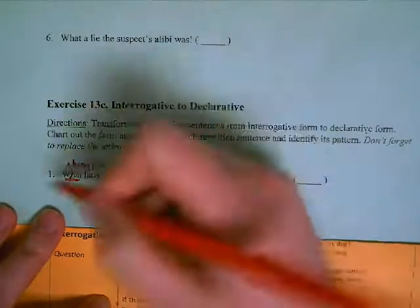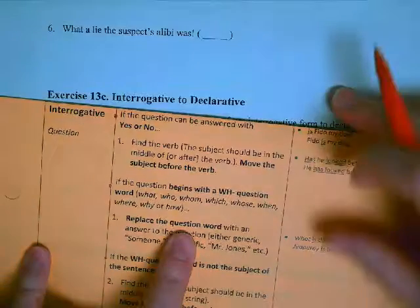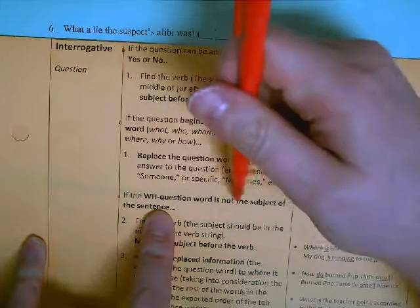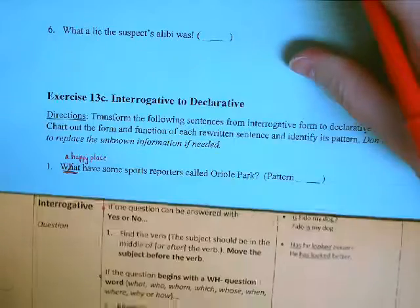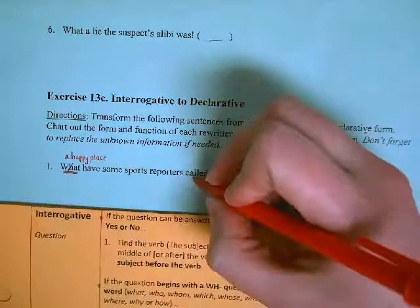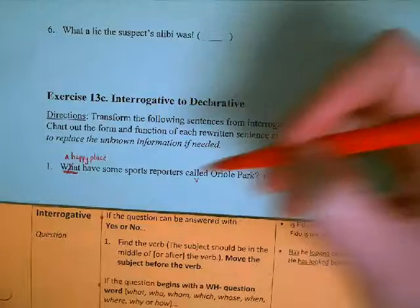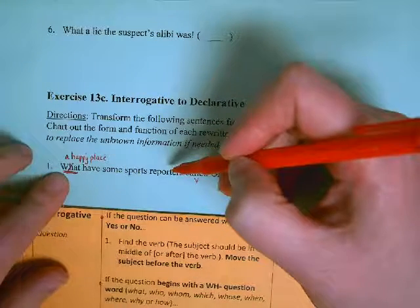You could say 'something.' Some sports reporters have called Oriole Park something. A happy place is what I'm going to use. So I've replaced the question word. Now I need to do the next check: if the WH-question word is not the subject of the sentence, how do I know what the subject of the sentence is? Find the verb. 'Called,' 'have called,' technically, is my verb.